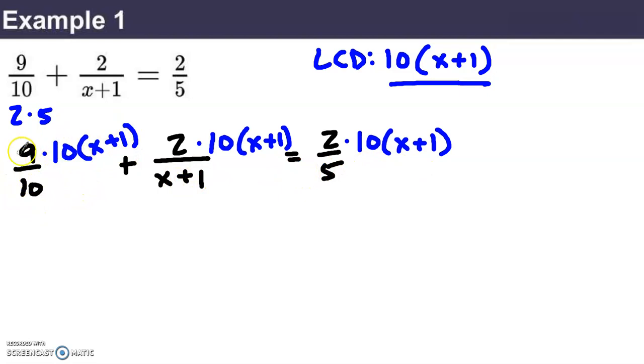Now, if I've done this correctly, there should be factors that will divide each denominator out completely. So, let's check that out. In this first term, 9 tenths, the 10 as the denominator divides this 10 out completely. In the 2 over x plus 1, the x plus 1 factors divide out. Remember, you can divide out whole factors. And then 5 divides into 10 twice.